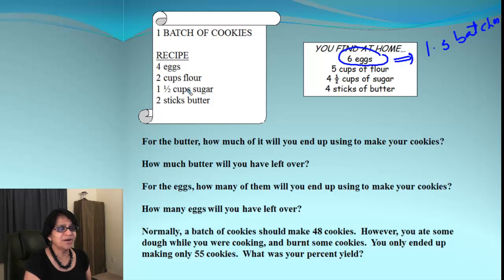Now, for butter, two sticks are required for one batch. So that means if you have 1.5 batches, amount of butter which will be used will be 1.5 times 2, which will be 3.